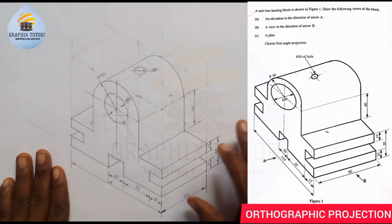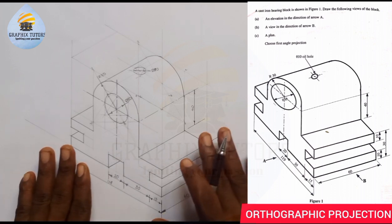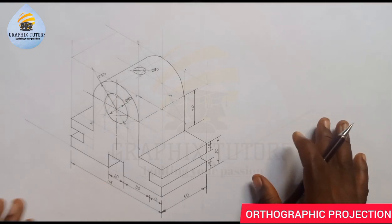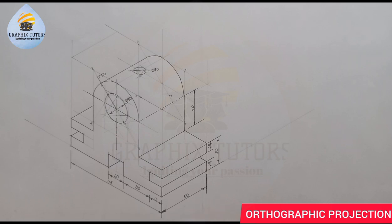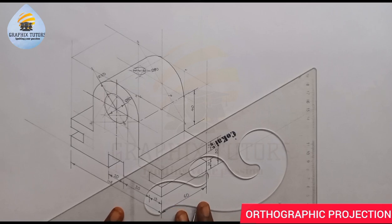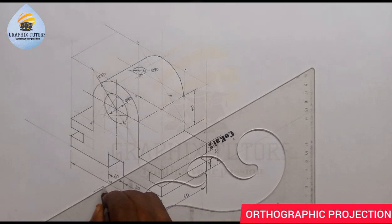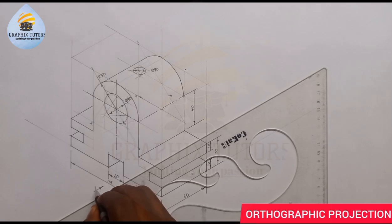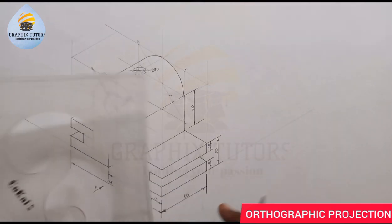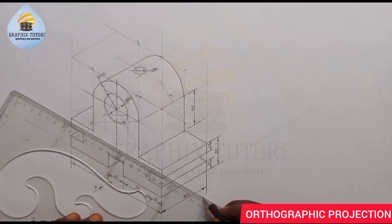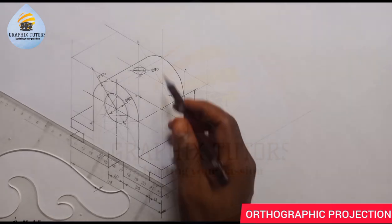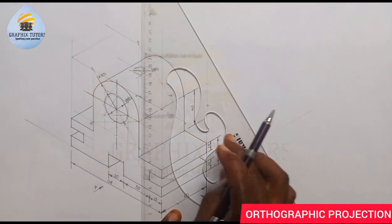I'll be constructing the drawing on the right-hand side. Just watch and see. We are told to look at direction arrow A — arrow A is facing this side. Arrow B is facing this side. The plan is always viewed from the top.